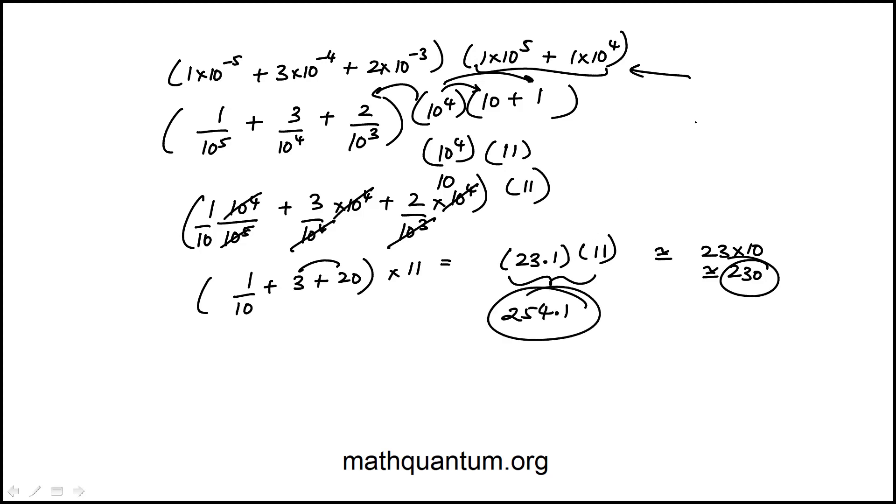You can certainly do the multiplication as well, either by hand or calculator. It's a matter of personal preference, and we do indeed get 254.1, which is choice C.